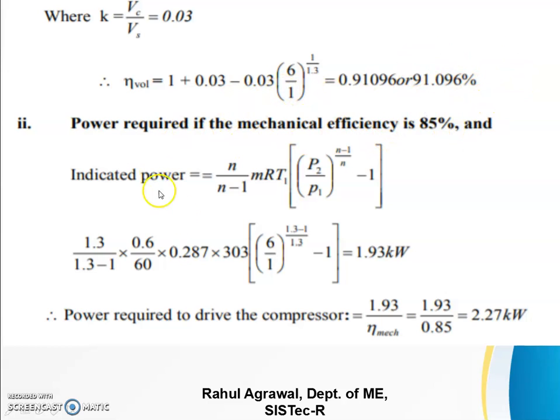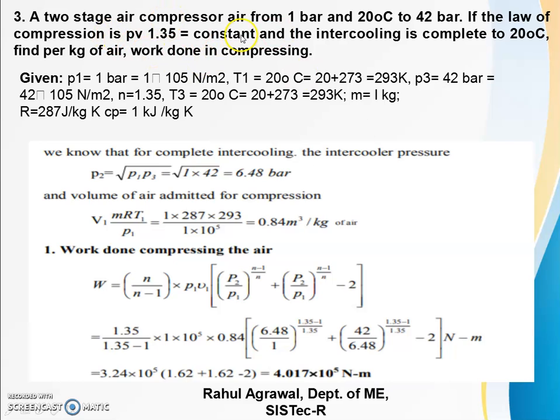Power required formula: (n)/(n-1) mRT1 [(P2/P1)^(n-1)/n - 1]. Mass m = 0.6/60 kg/s. Substituting values gives power = 1.93 kilowatt. But the most important is power required to drive the compressor. We divide by mechanical efficiency: 1.93/0.85 = 2.27 kilowatt.